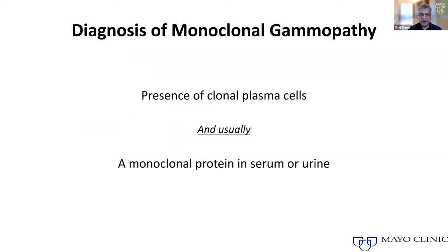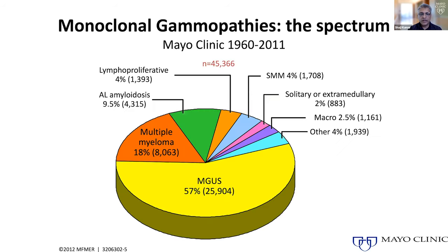This whole family of abnormalities called monoclonal gammopathies is characterized by the presence of clonal plasma cells — abnormal plasma cells that all originate from what we believe may be one or two abnormal cells, which continue to grow in an uncontrolled fashion. They typically secrete immunoglobulins, or at least the kappa or lambda light chains, which is what we refer to as the monoclonal protein. This monoclonal protein can be present in the blood or found in the urine.